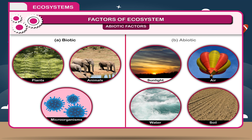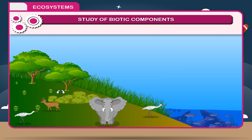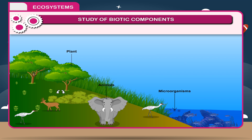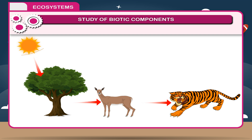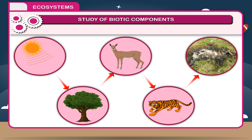The biotic and abiotic components of an ecosystem all work together in a balanced system. Biotic components, or the living components of an ecosystem, consist of various plants, animals and microorganisms. All biotic components interact with each other and with the abiotic components in the biosphere. On the basis of their mode of nutrition, the biotic components are differentiated into producers, consumers and decomposers.